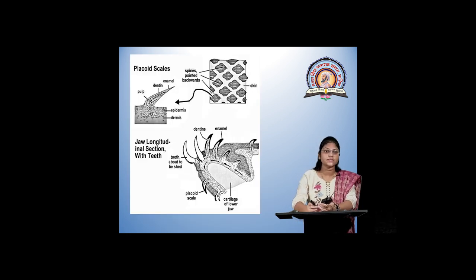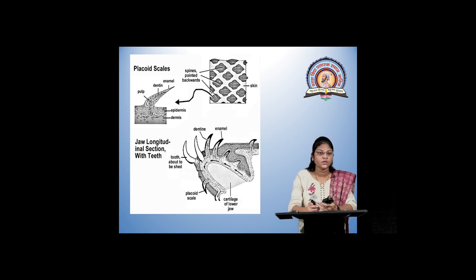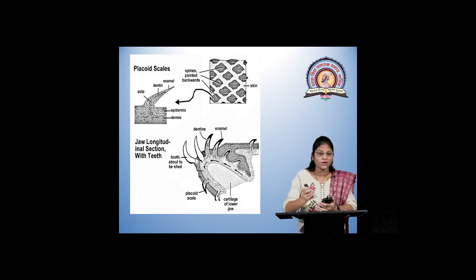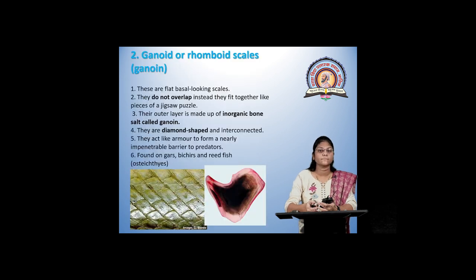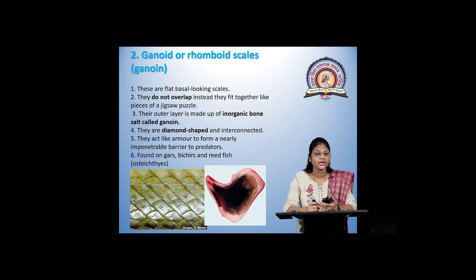Here we can see the detailed structure of the placoid scale. There is a dermis, epidermis, and the pulp cavity seen inside the scale. It is covered by enamel-like hard calcareous protein. Next is the ganoid or rhomboidal scale. The name ganoid is derived because it is made up of an inorganic bone salt called ganoin.